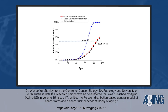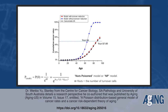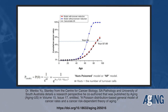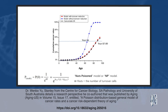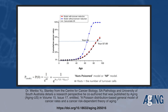I call this model the NP Poisson model, or NP model. NP is derived from N, the turnover cell number, and P, the probability of cancer within individual cells.